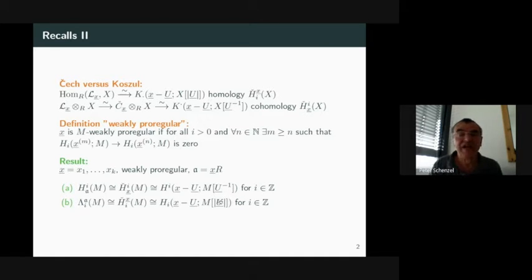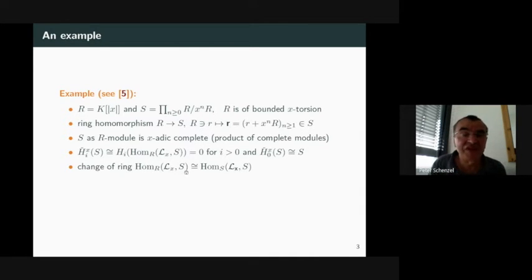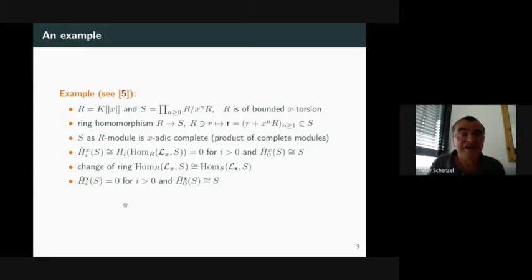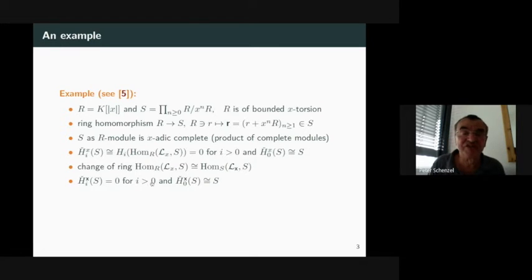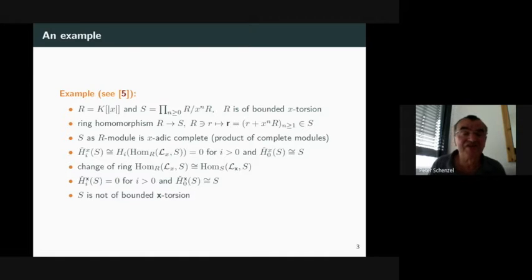This gives a conclusion: I'm in a Noetherian ring, X is weakly pro-regular, and I have this information. Now it is easy to see that I have a change of ring theorem — the homomorphism with respect to R and LX is isomorphic to the homomorphism with S and LX, where X is the image of X in S. Because of this isomorphism, the Čech homology of S is zero for positive i and for i=0 it is S. But S is of course not of bounded X-torsion, because no power of X will vanish. This is an interesting example which has to do with another characterization of pro-regular sequences not completely worked out at the moment.